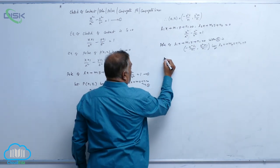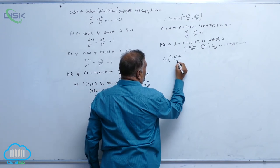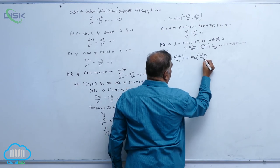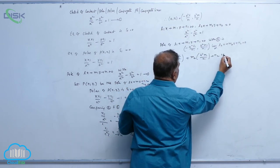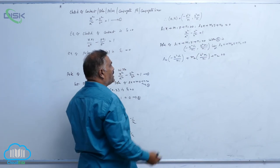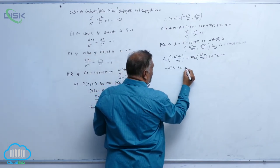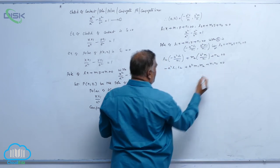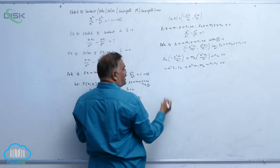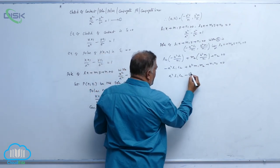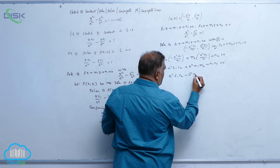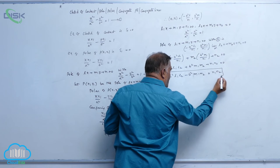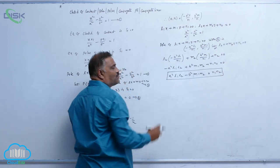Substituting: l2 into (minus a square l1 by n1) plus m2 into (b square m1 by n1) plus n2 equal to 0. This gives minus a square l1 l2 plus b square m1 m2 plus n1 n2 equal to 0. Sending terms to the right-hand side: a square l1 l2 minus b square m1 m2 equal to n1 n2. This is the condition for the lines to be conjugate.